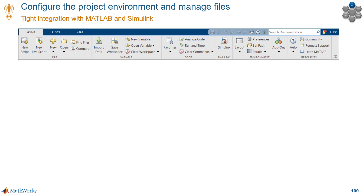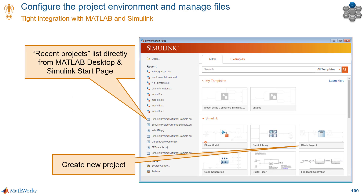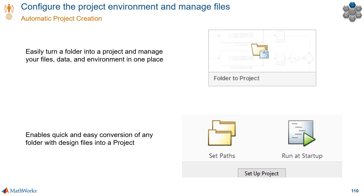You can create a new project from the MATLAB tool strip and also from the Simulink start page. It's easy for you to create a new blank project, a project from an existing folder, or a git or subversion repository. But if you have an existing folder locally, you can wrap it in a project with just a few clicks and your files will be automatically added for you. You may be thinking, why would I want to do that? Well, let's see a few reasons.